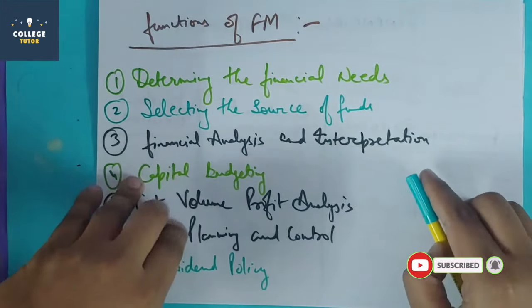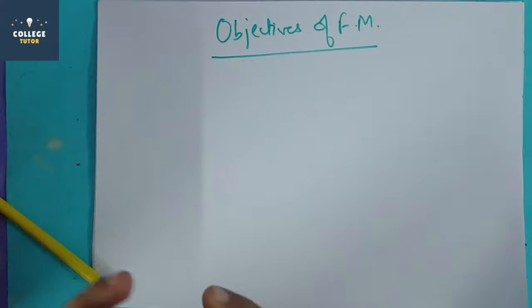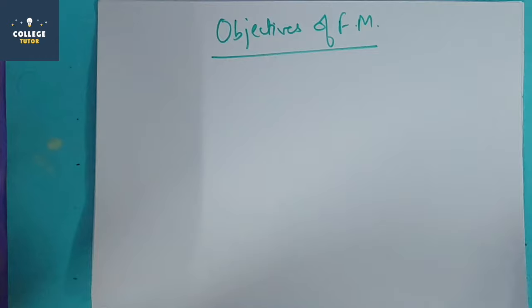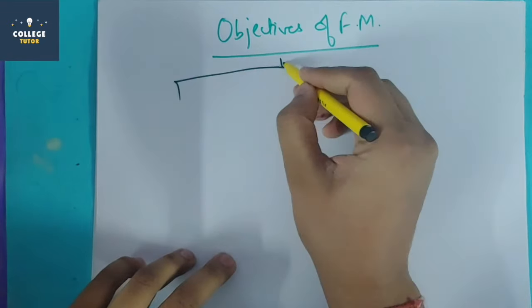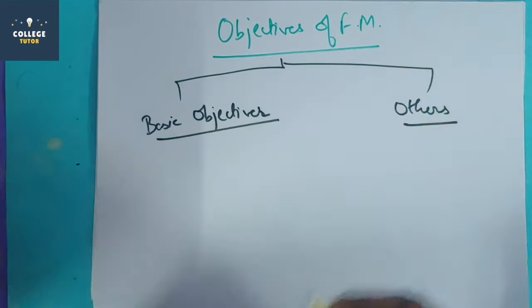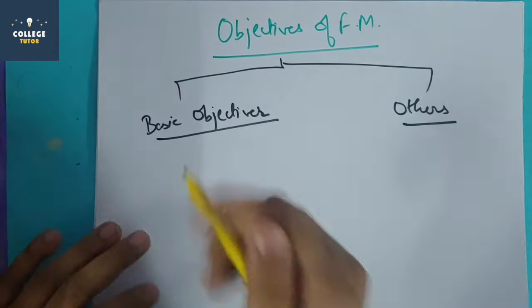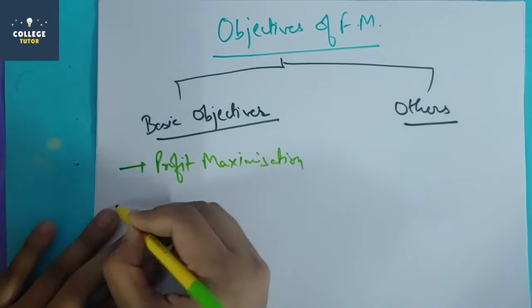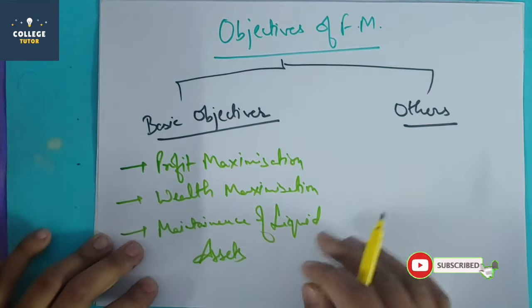After functions, we will discuss the objectives. Most textbooks list basic objectives, but we will discuss both basic and additional ones. The basic objectives of financial management are: first, profit maximization; second, wealth maximization; and third, maintenance of liquid assets.